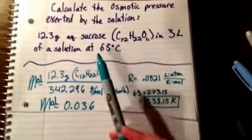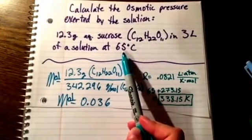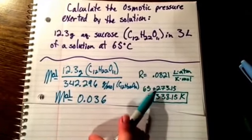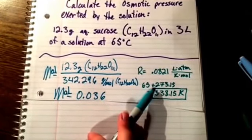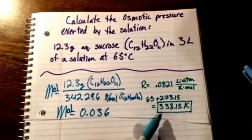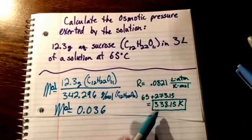So to start off with, we're going to take our 65 degrees Celsius and change it into kelvins. We can do this by adding 273.15. That gives us 338.15 kelvin.